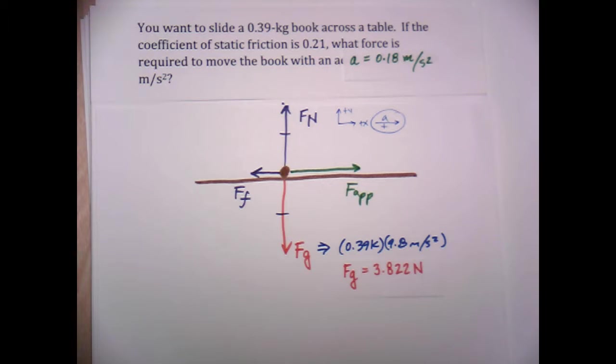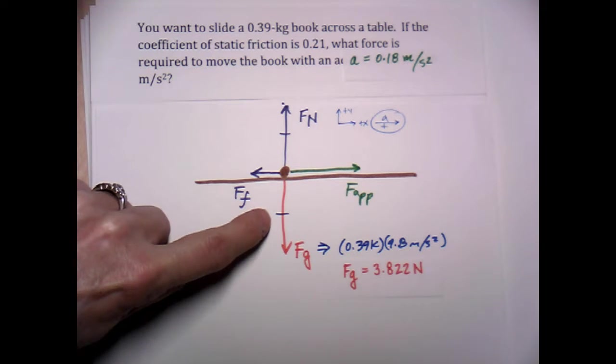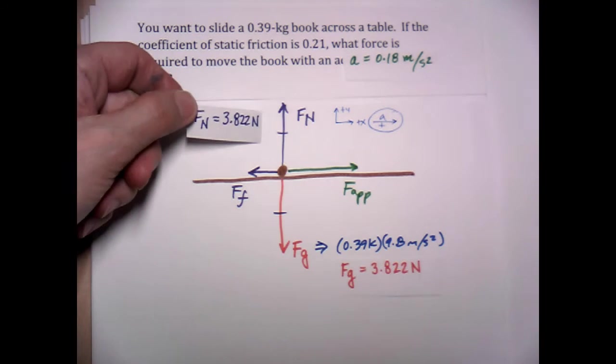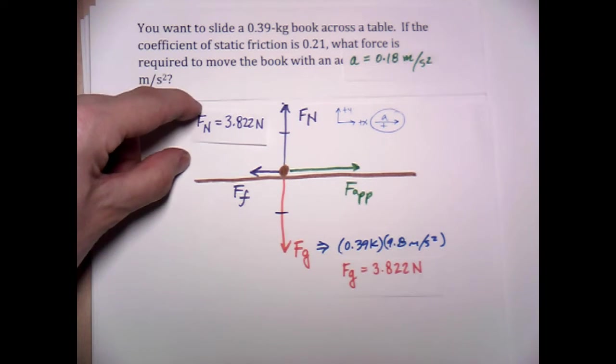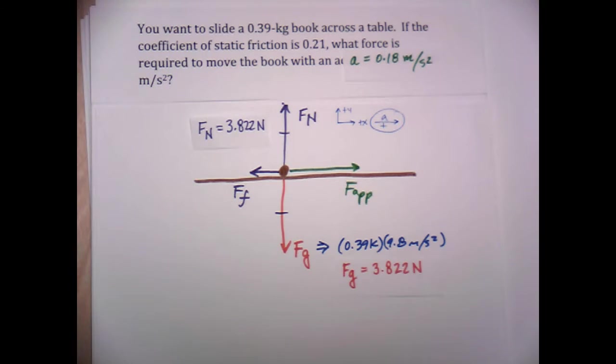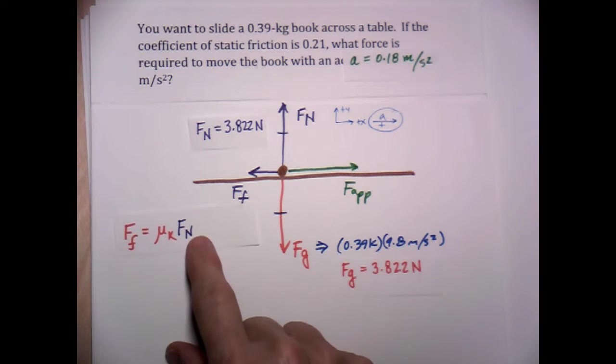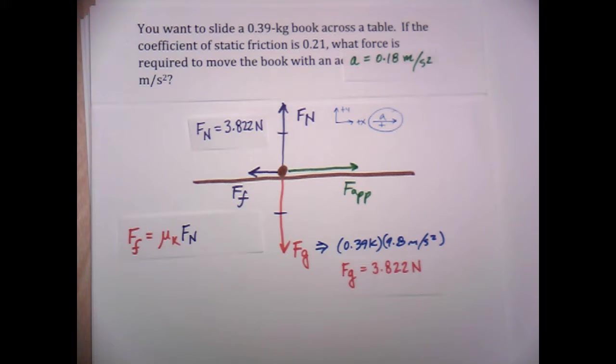And from our free body diagram, since this arrow is equal in magnitude to this arrow, we know that the value for the normal force is also 3.822 newtons. So I'll just set that there. Now, the reason that we care about the normal force is because the frictional force is dependent on the normal force. And the coefficient of friction times the normal force will give us the frictional force.